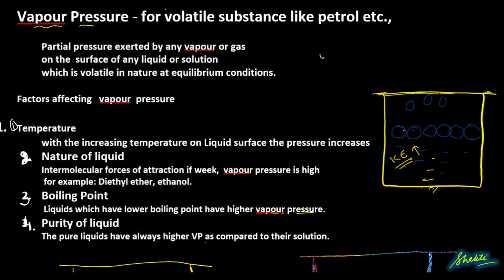We will cover vapor pressure for volatile substances like petrol as compared to water. Vapor pressure is the pressure exerted by any vapor or gas on the surface of any liquid or solution which is volatile in nature, at equilibrium.